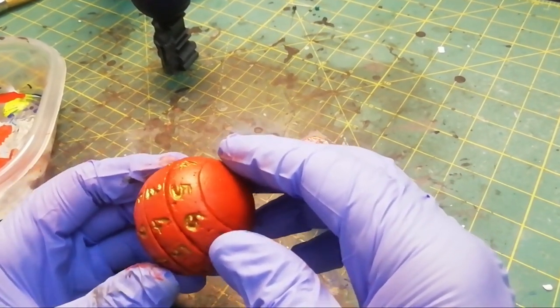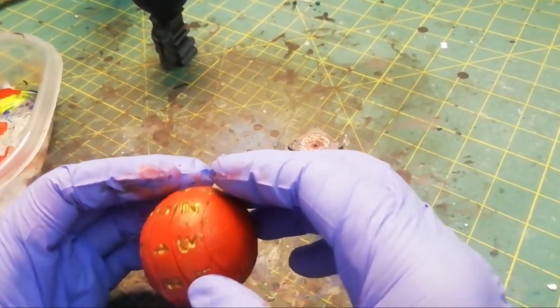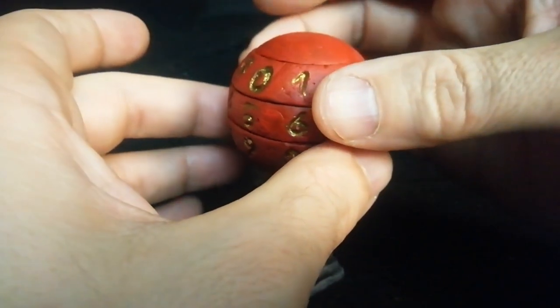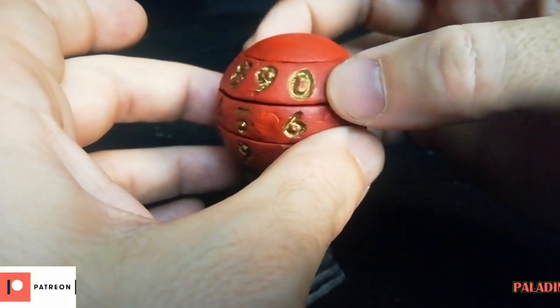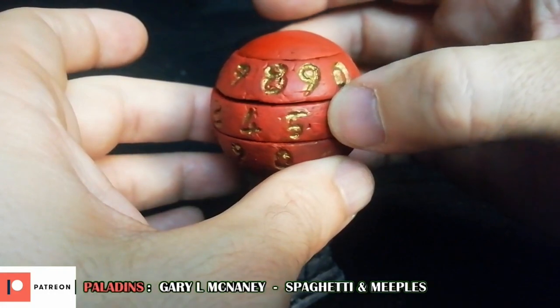I colored the bas relief numbers with bronze and assembled everything, fast and effective. Now, I just have to bring these beautiful accessories to the game table.